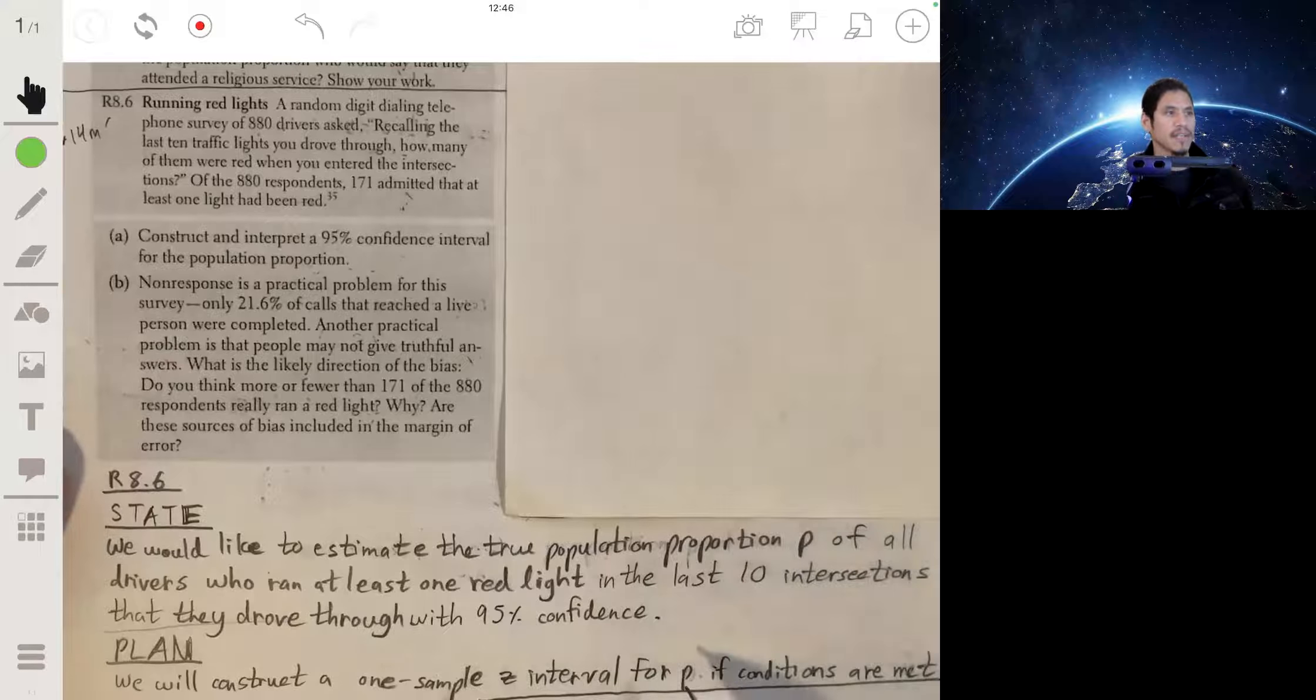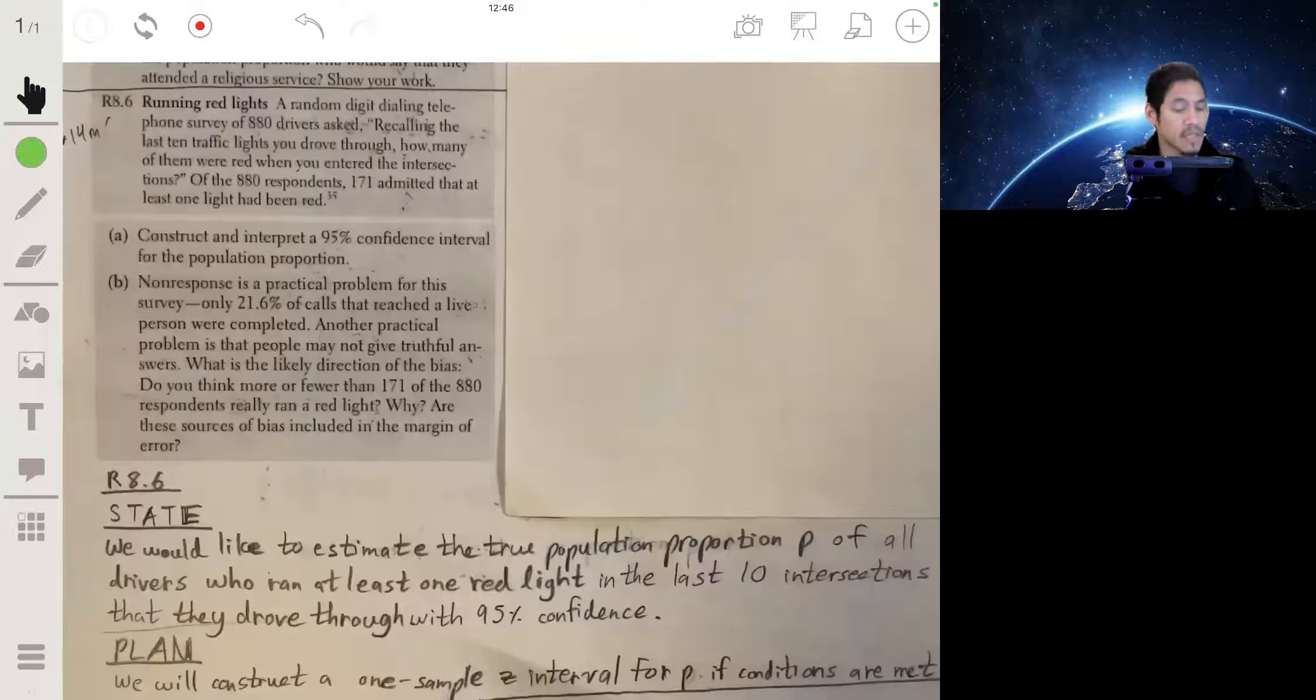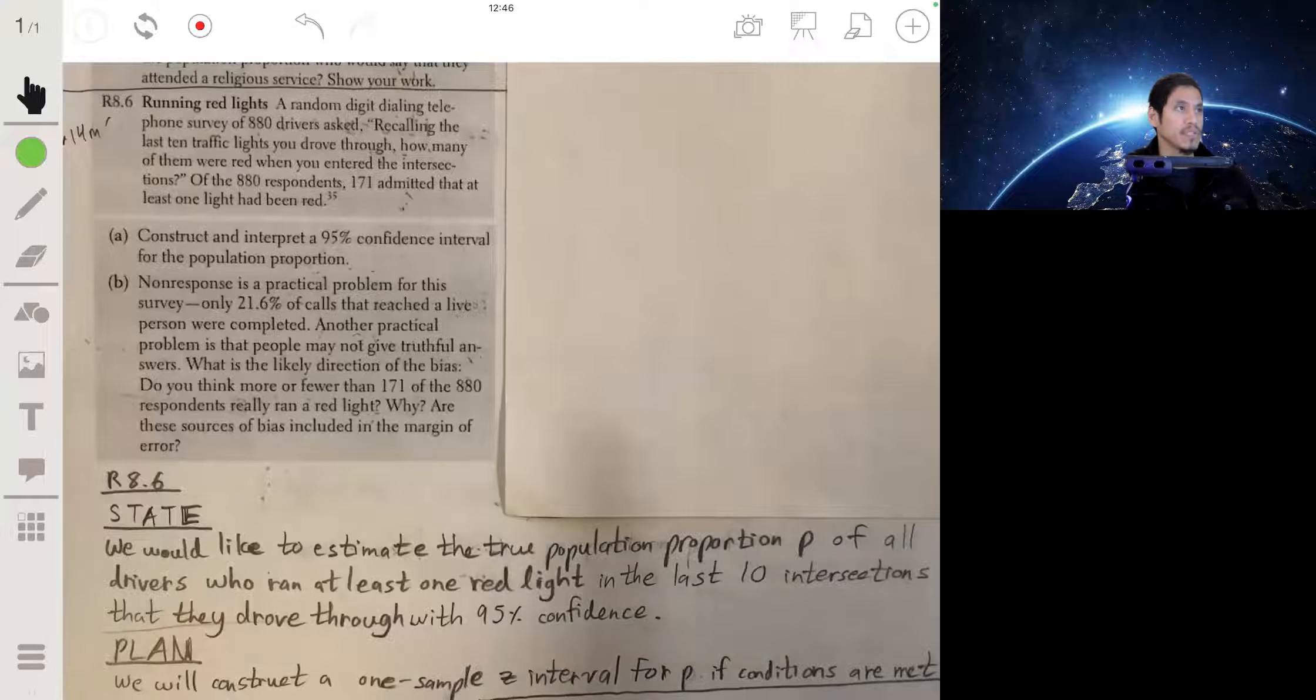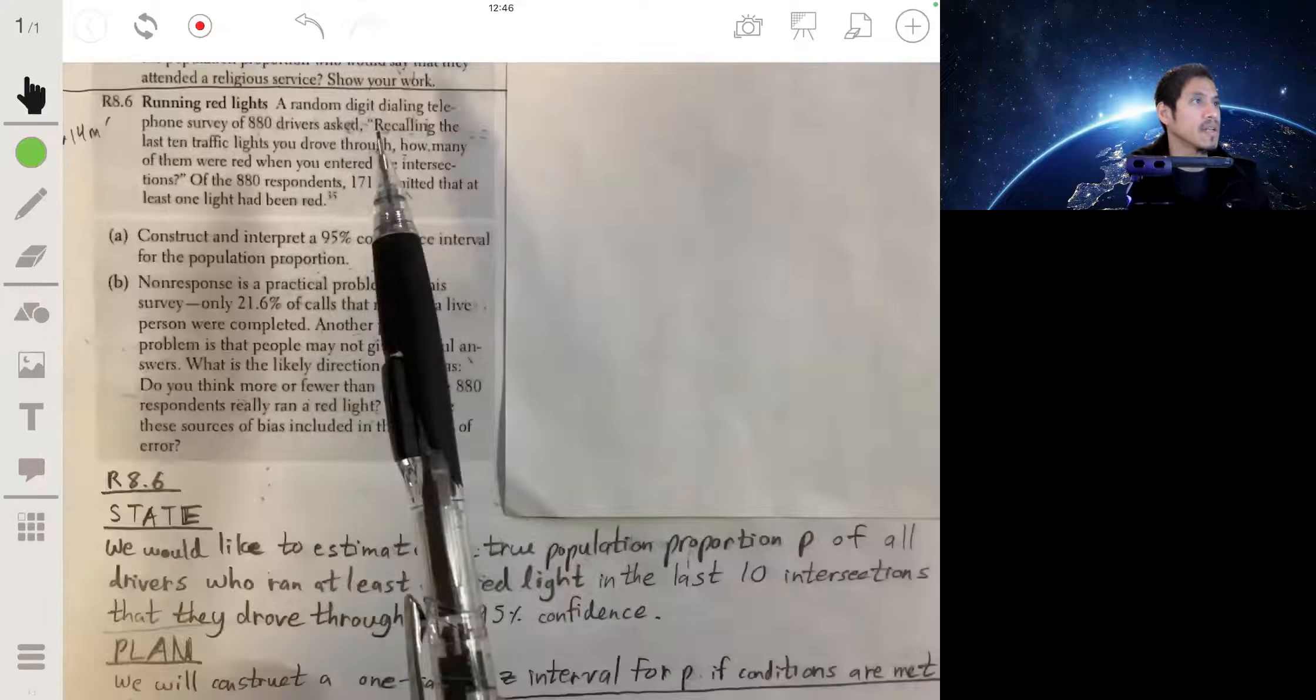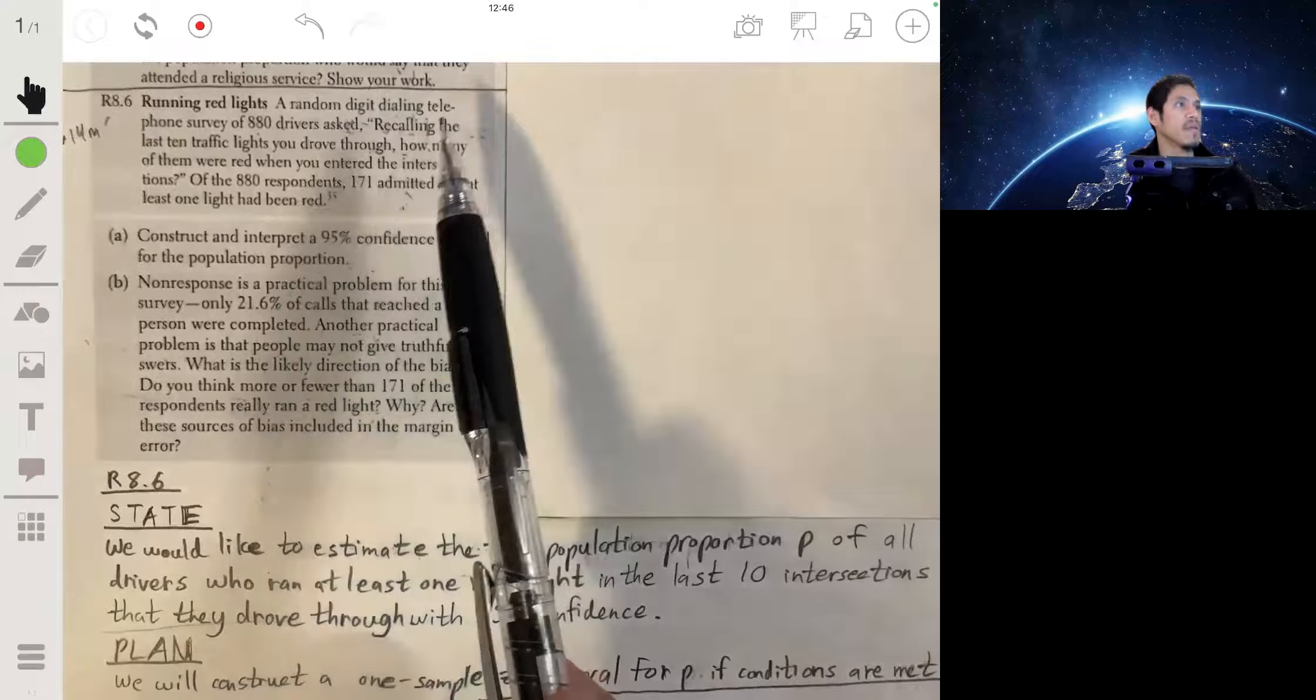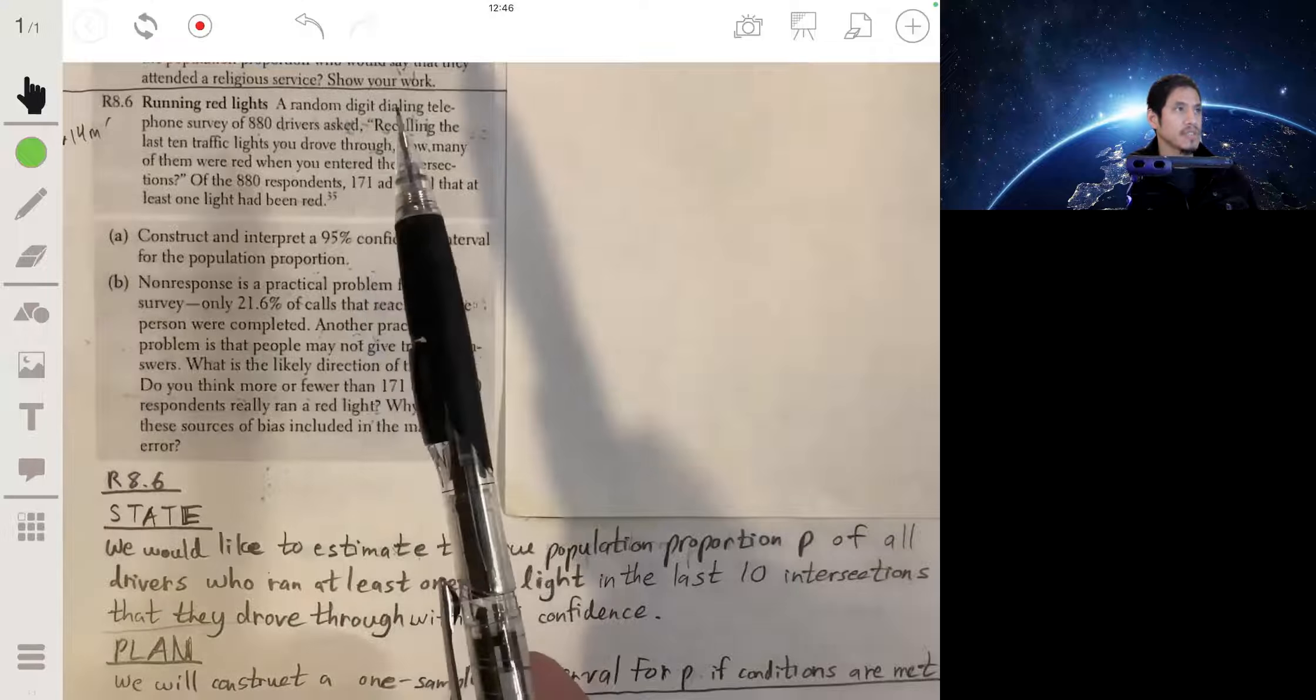Next we check the conditions. The conditions recall are the random, 10 percent, and the large counts condition. The random condition: we go ahead and look at our problem and see that it does say random digit dial-in telephone survey, so the random condition is met.